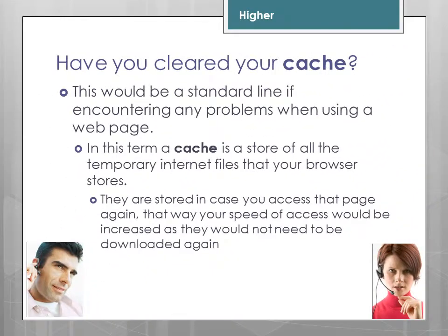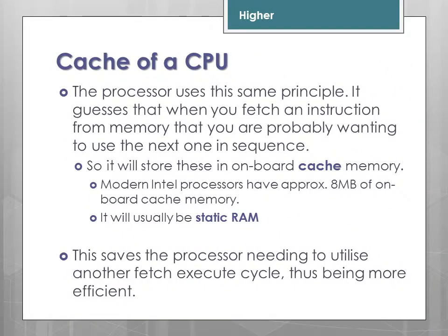Dynamic RAM — there is far more information about that in the revision notes. If you have ever encountered problems on a web page, standard advice is to clear your temporary internet files or cache files. In this context, a cache is a store of temporary files. The reason you store them is that if you revisit that web page, your browser doesn't need to re-download all the images. The computer uses the same principle — it guesses that if you've used an instruction five or ten times, you'll probably use it again, so it keeps that instruction in cache memory. Or if you're looking at instruction number 10, it may grab 11 and 12 as well. Very complex algorithms determine what gets stored in the cache.